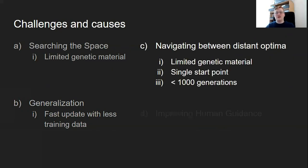Three, if we have a large change in our environment, how do we navigate between those distant optima, given we have limited genetic material, a single start point, and very few generations in which to do it?